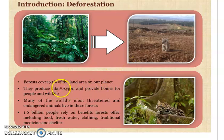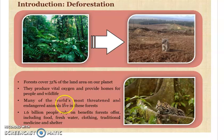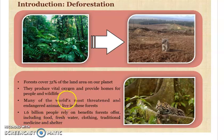At the moment, almost 31% of the land area is covered by forest. Forests are the vital source of oxygen and they provide homes for people and wildlife. Many of the world's most threatened and endangered animals live in these forests. Especially the tropical forests are the home of millions and billions of people and animals. Approximately 1.6 million people rely on the benefits from the forest, like fresh water, clothing, traditional medicines and shelters.